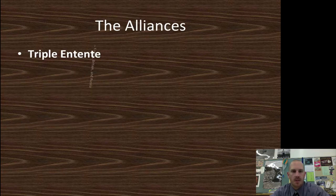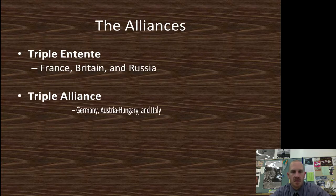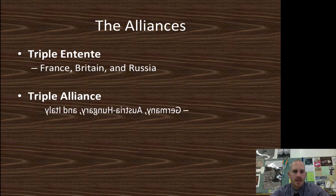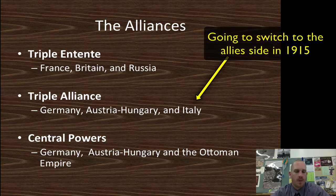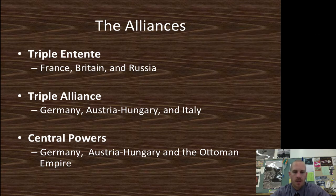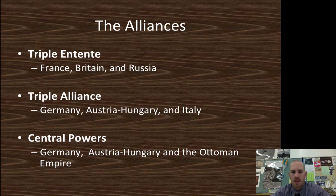The alliances: the Triple Entente — the good guys — France, Britain, and Russia. The Triple Alliance — the early alliance — Germany, Austria-Hungary, and Italy, with Italy being the flip-flopper very early on. And then later the Central Powers: Germany, Austria-Hungary, the Ottoman Empire, and Bulgaria, though Bulgaria isn't one of the big players of the war.